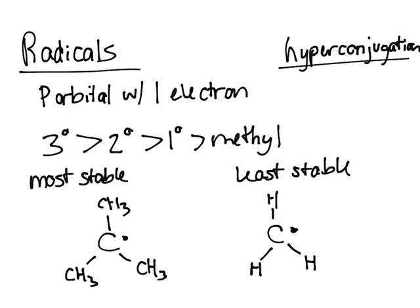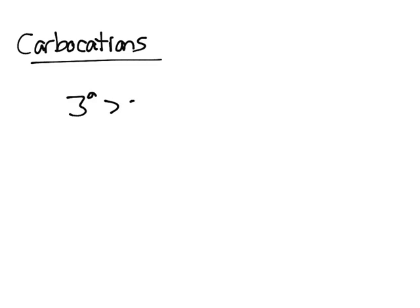This is the same thing when it comes to carbocations. If methyl groups are electron donating, they can help stabilize the positive charge. It'll be the same thing: tertiary is more stable than secondary, more stable than primary, and more stable than methyl.